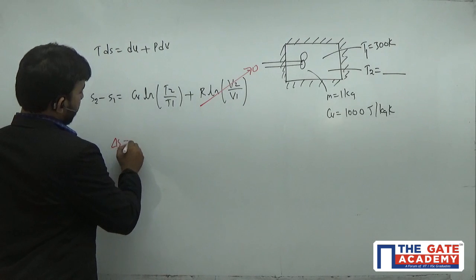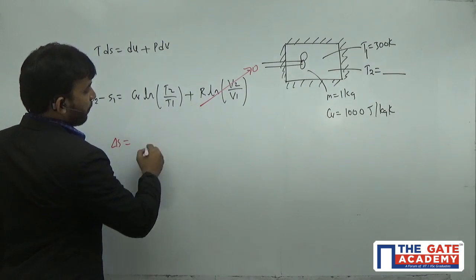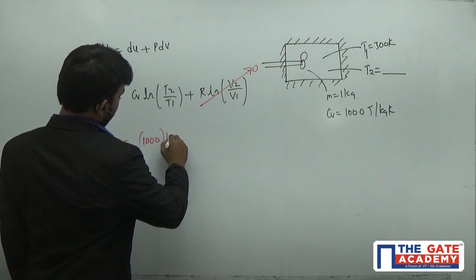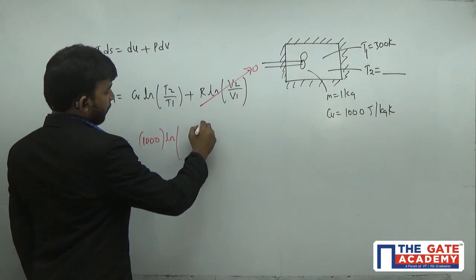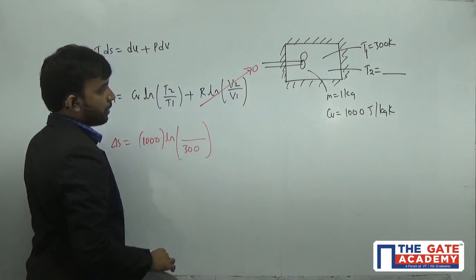Now the change in entropy for the ideal gas is CV log(T2/T1). CV is given as 1000, so it's 1000 log(T2/T1). I don't know what is T2, but I know T1, so T1 is 300.